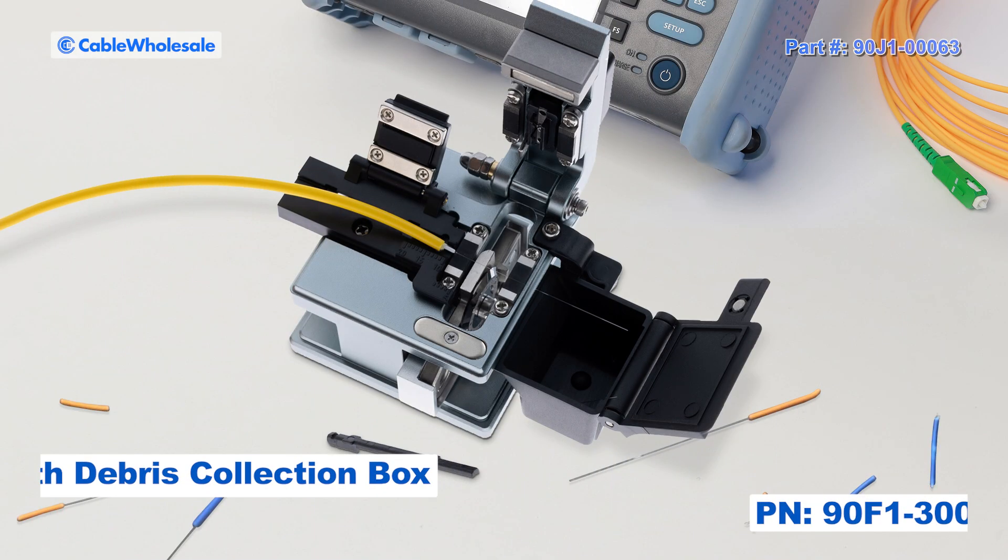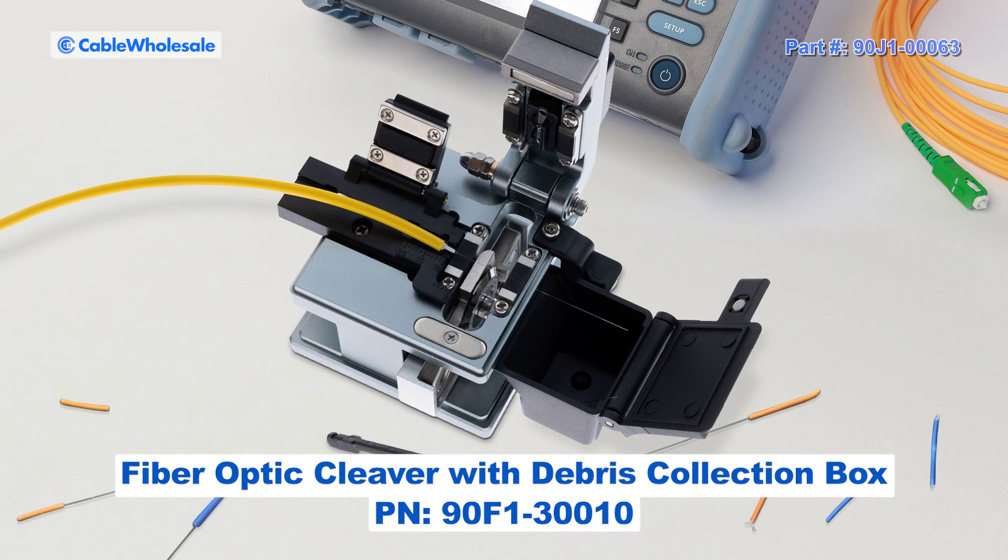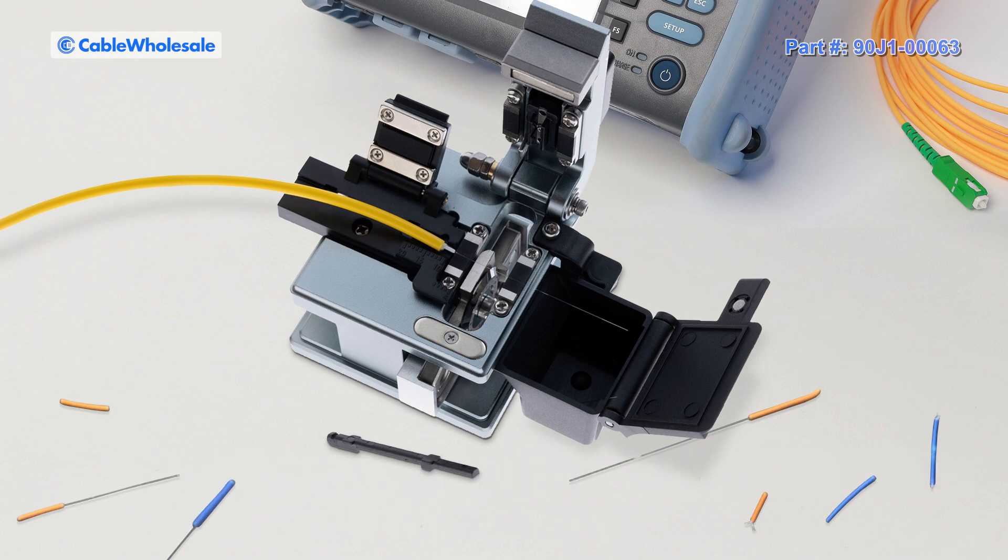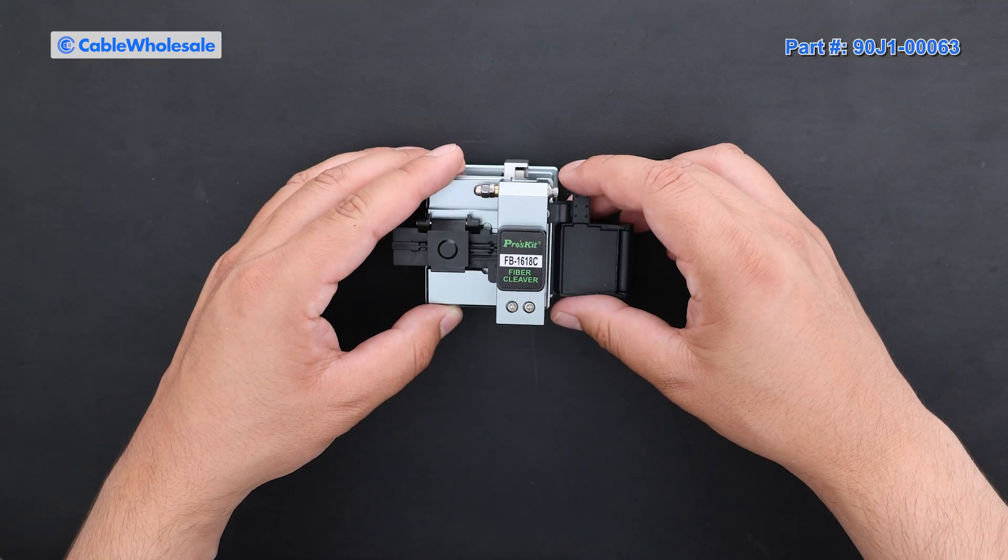Now, on the other hand, you have precision cleavers. A precision cleaver uses a wheel-shaped blade to make a perfect flat cut that leaves a 90-degree cleave angle on the end of the fiber. This is important when performing fusion splices.